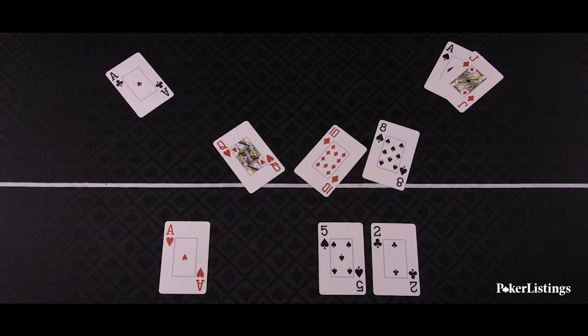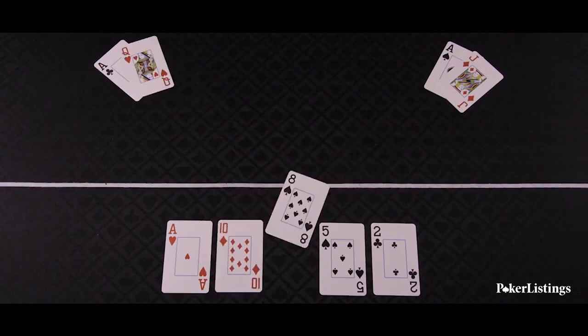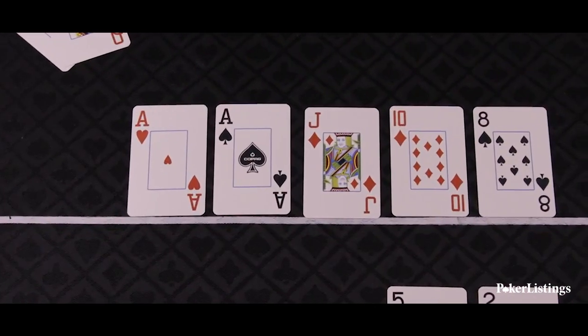So if you're holding Ace-Queen, you have a pair of Aces and Queen-10-8. If you have Ace-Jack, you're playing a pair of Aces and Jack-10-8.